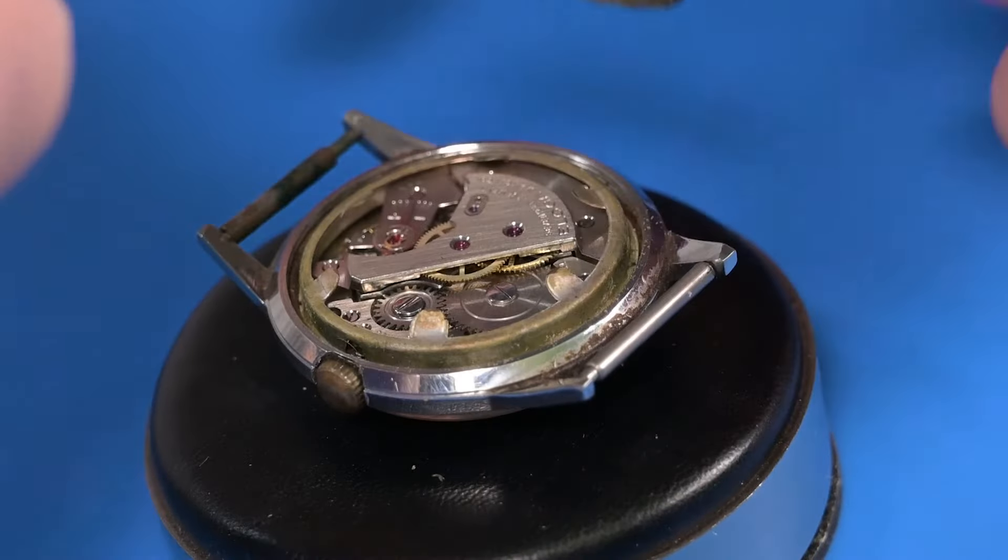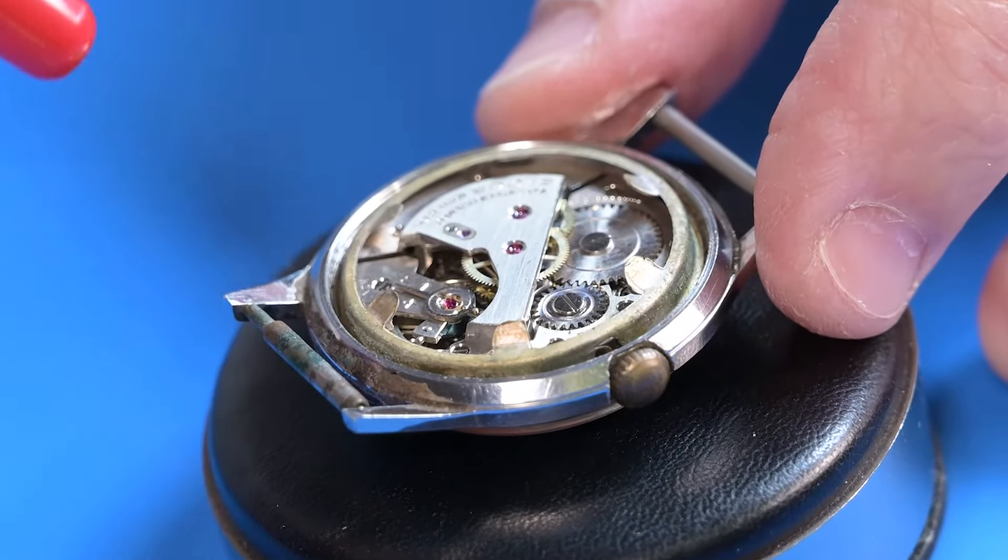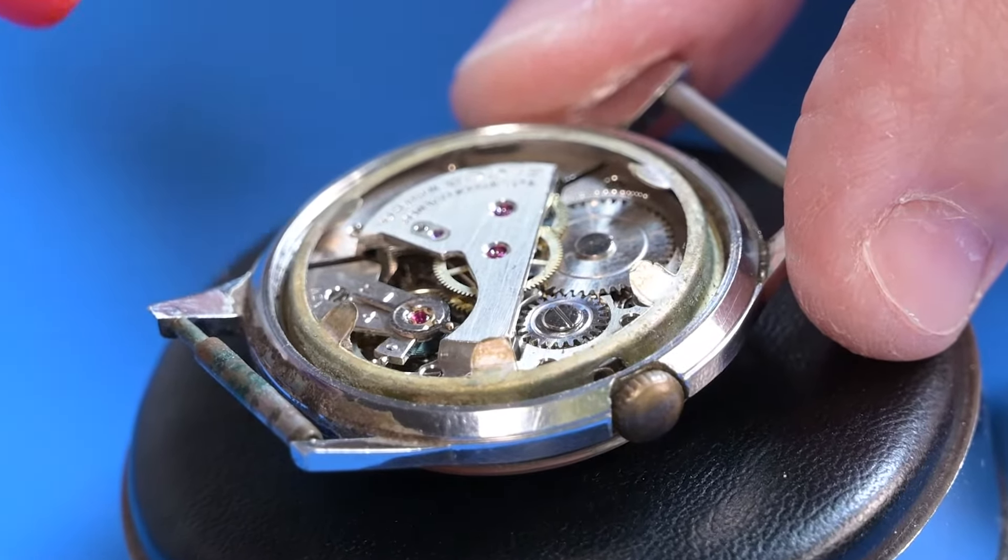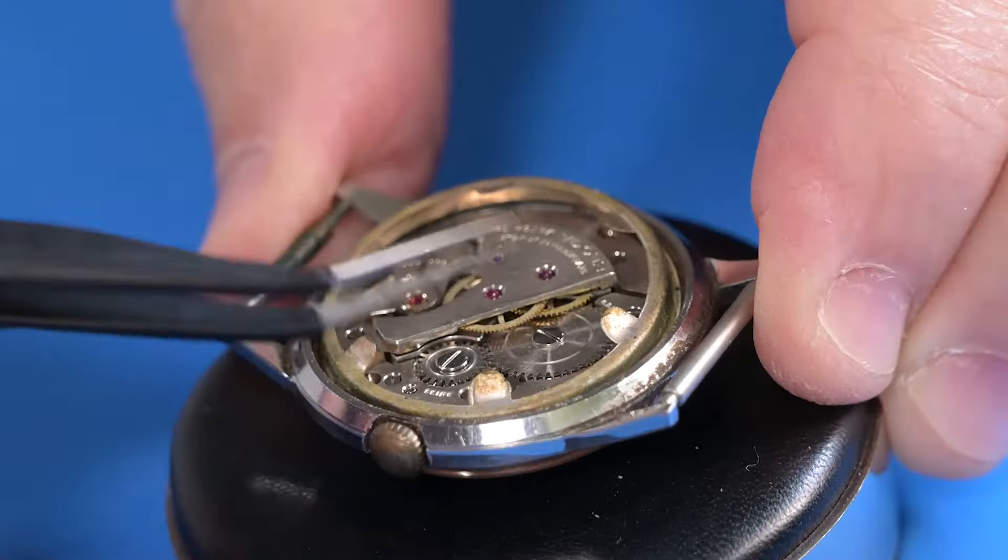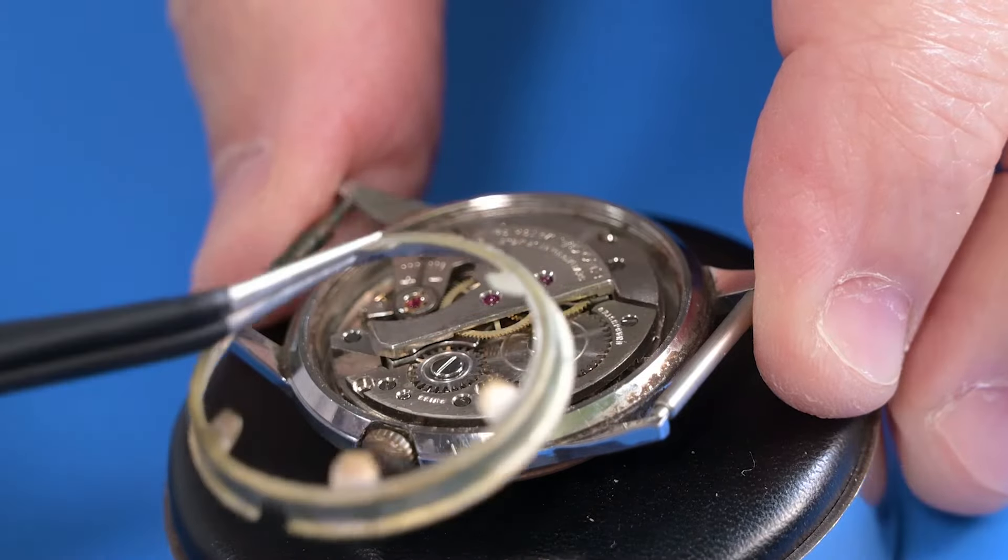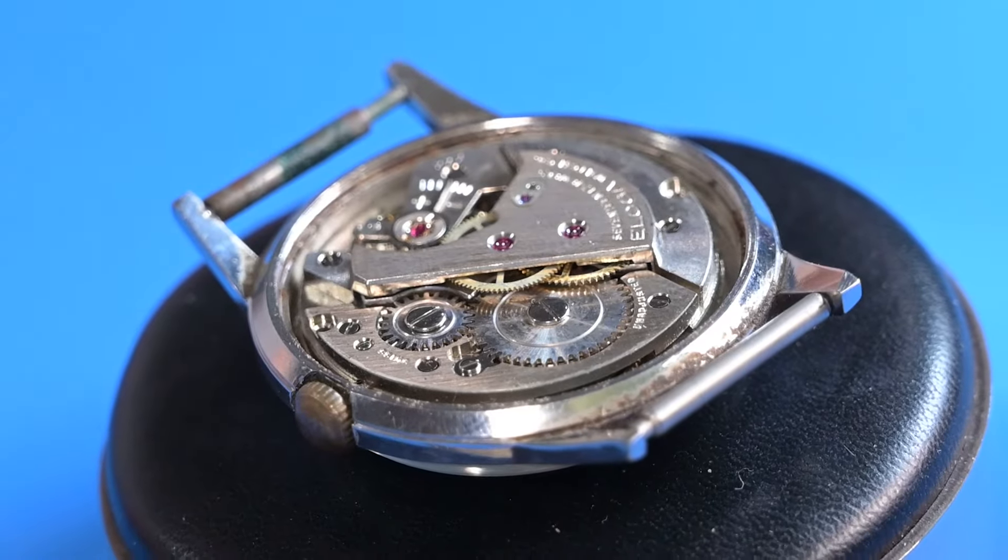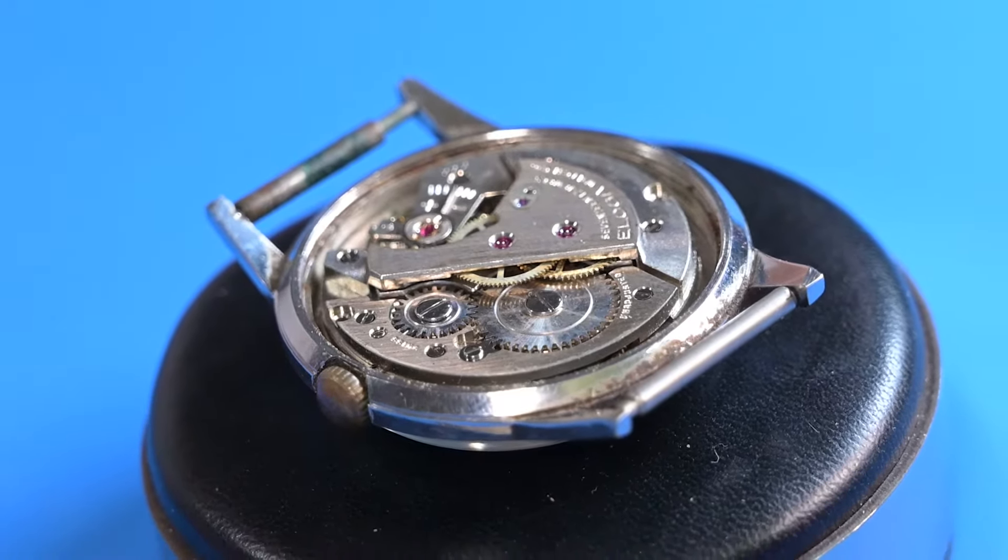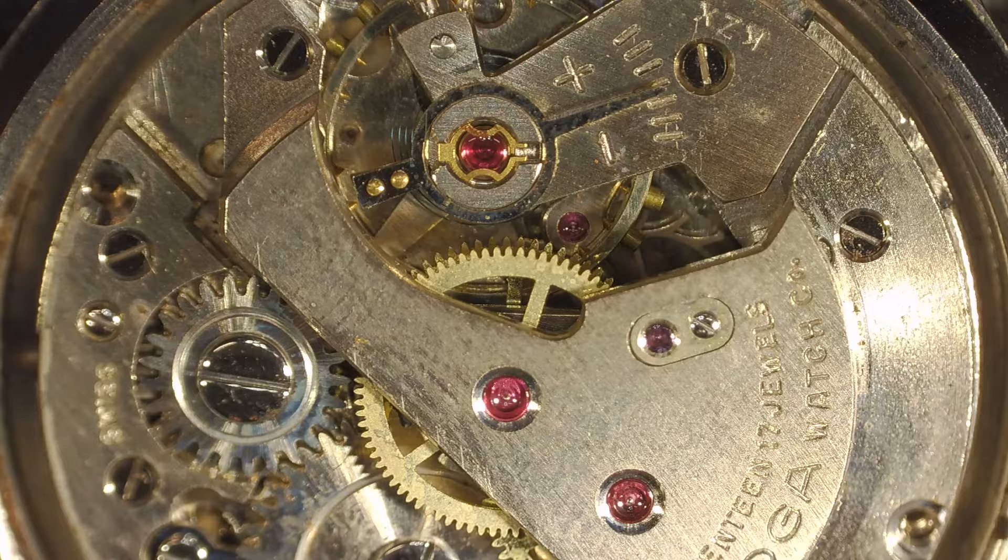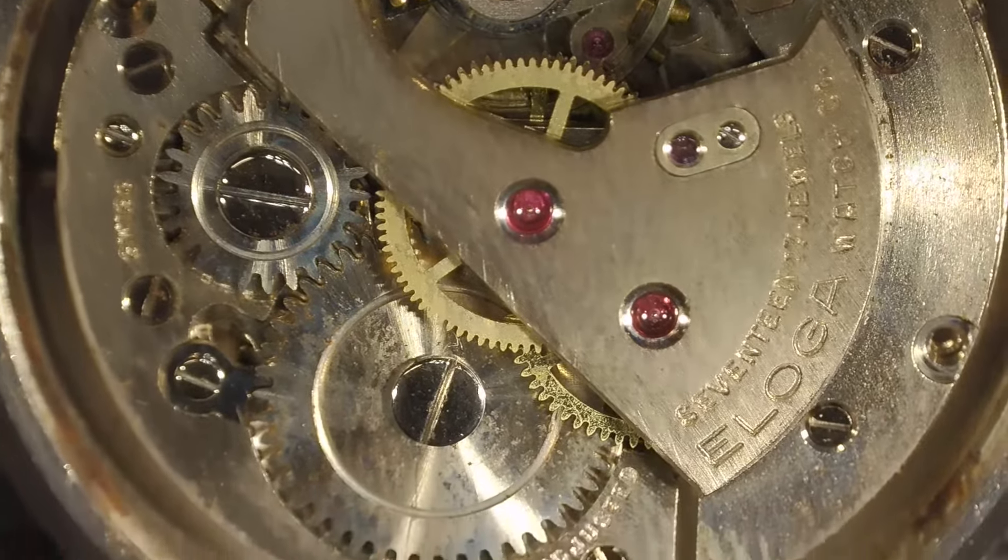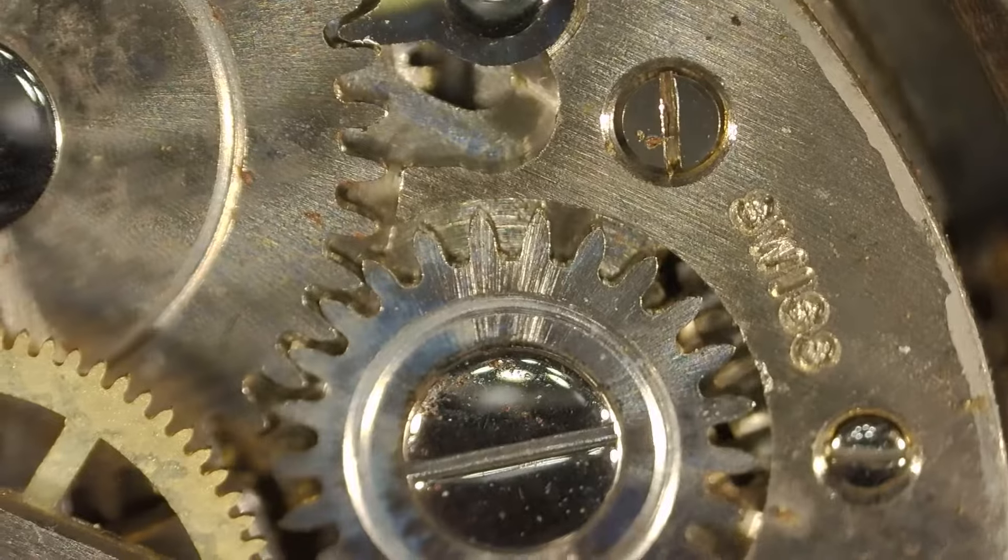The insides confirm that there are 17 jewels and an IncaBlock setting on the balance wheel, which is a shock-absorbing jewel mount. With some puffs of air from my dust blower, I'm trying to get the balance wheel spinning. There's threaded holes for case clamps in the movement, but this watch just uses a metal spacer to keep the movement centered in the case.